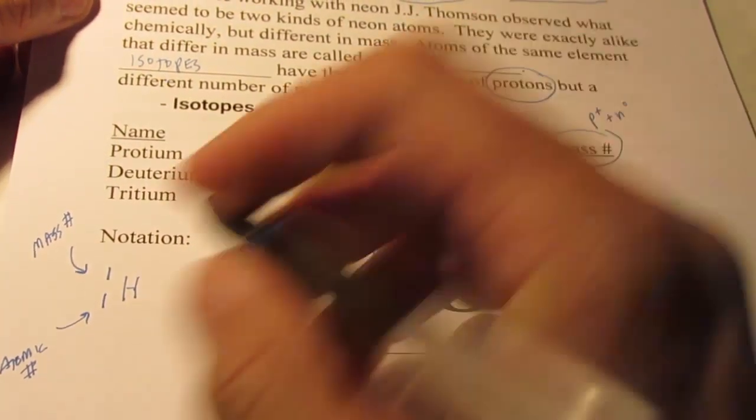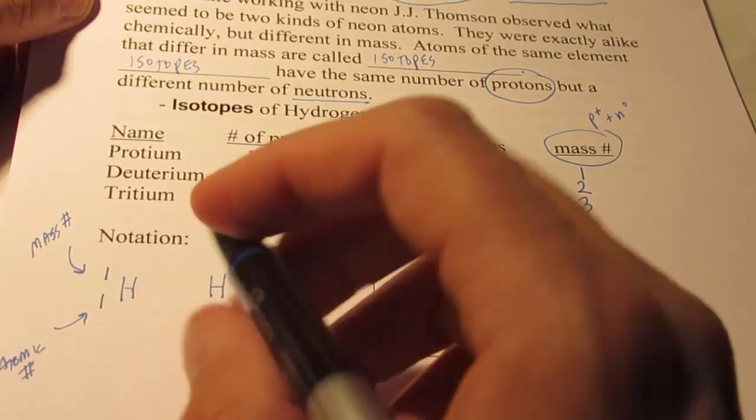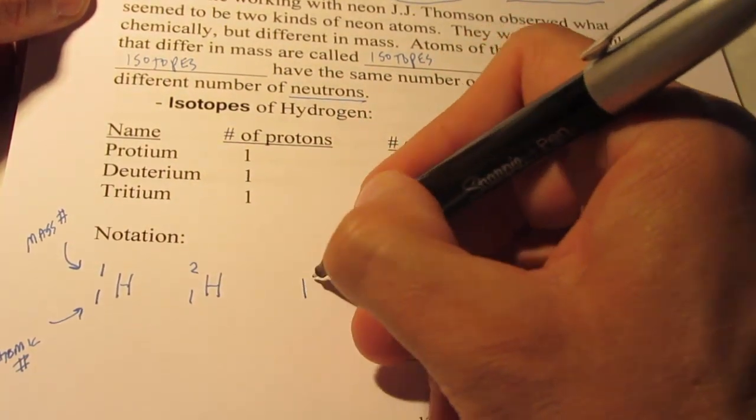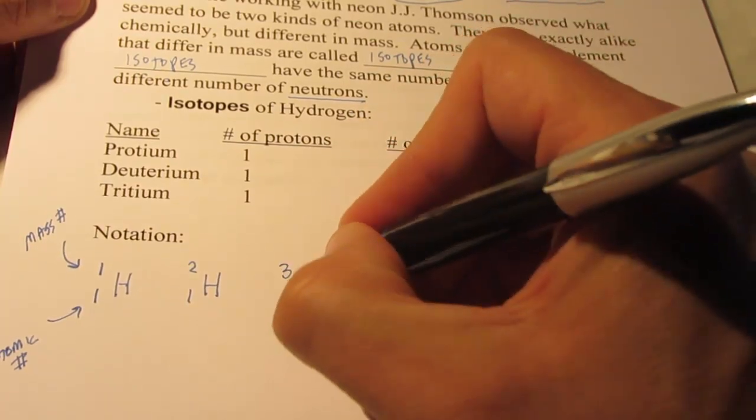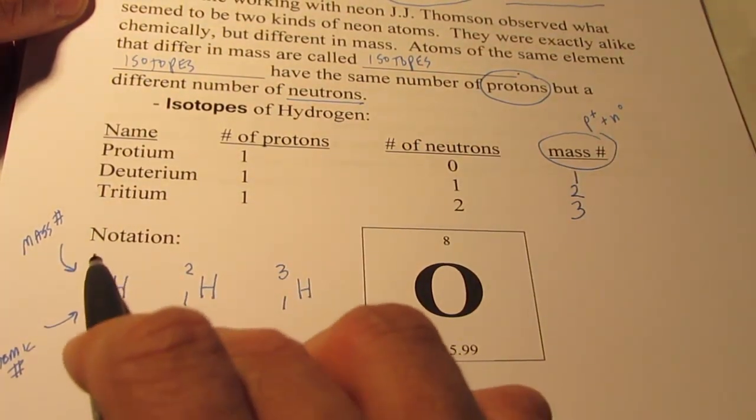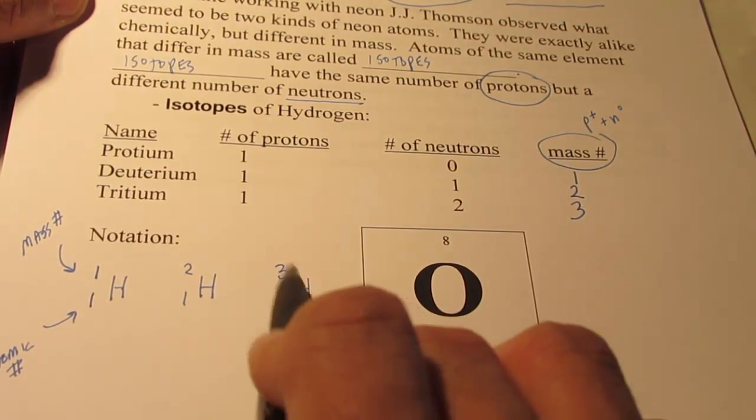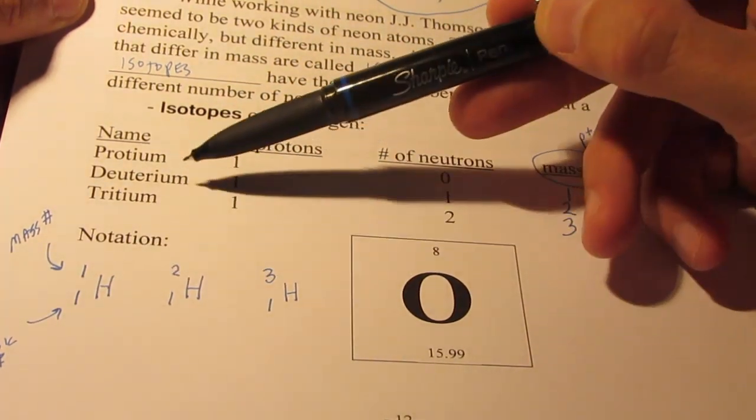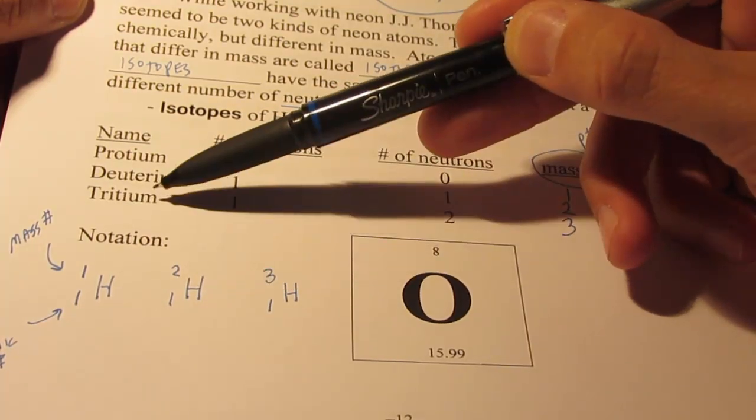We call this isotopic notation. For the three isotopes of hydrogen, we would have one with a mass number of 1, one with a mass number of 2, and the third isotope has a mass number of 3. So hydrogen-1, hydrogen-2, hydrogen-3, their more common names are protium, deuterium, and tritium.